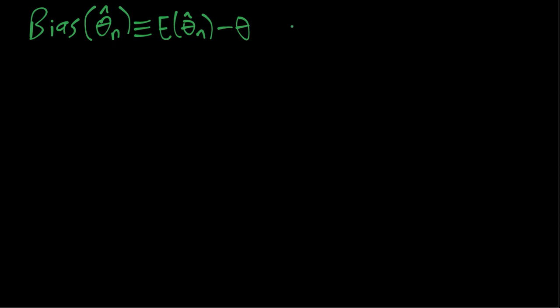So here our estimator is the sample mean and our population parameter is the population mean. To keep things simple so we can focus on the new concept of bias, we'll assume the sampling is IID, independent and identically distributed.